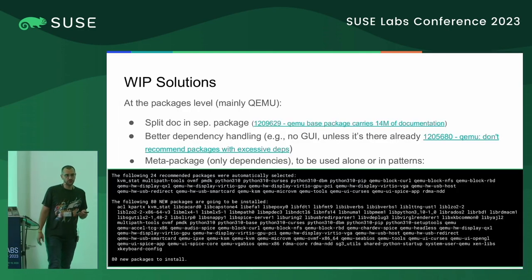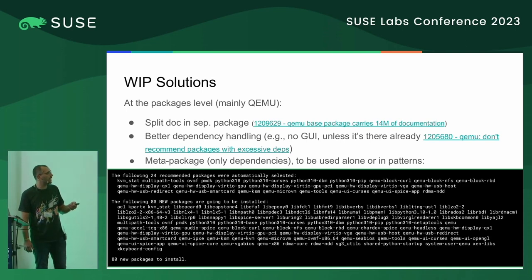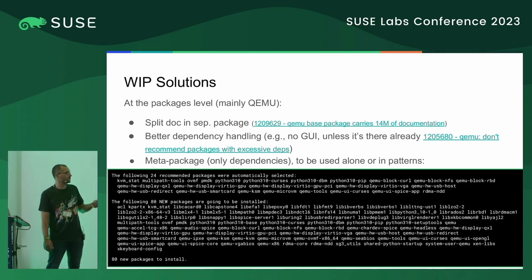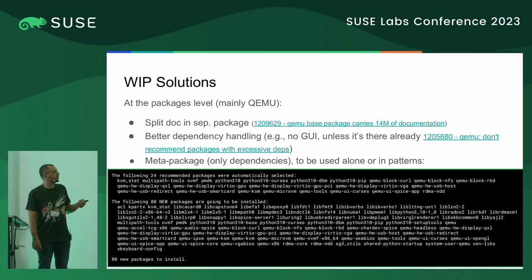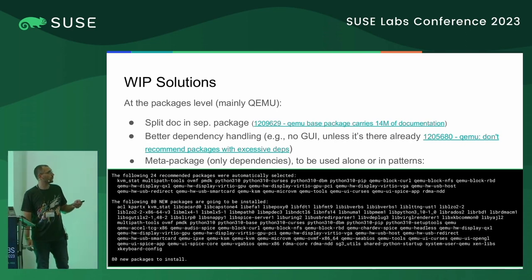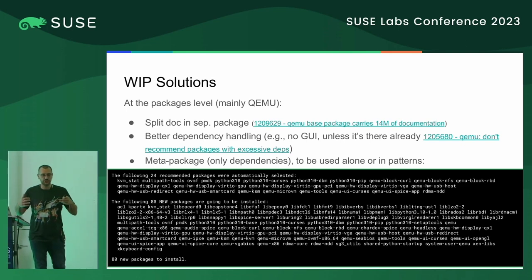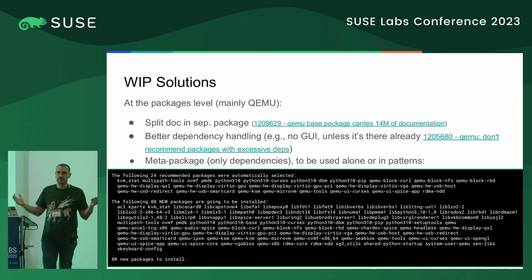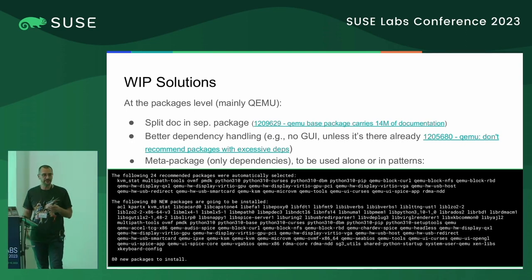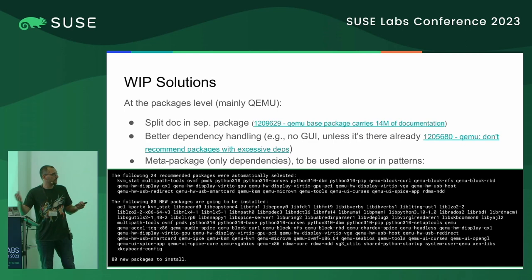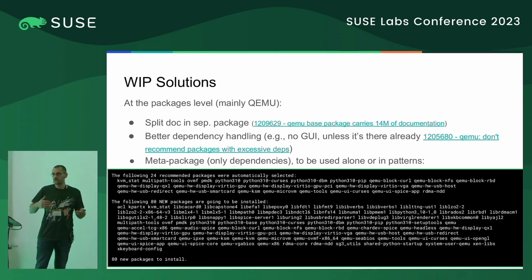There are already open bugs about the situation shown in the previous screenshot, and we are working on them. Even before getting to the patterns, there are things we can do for the various QEMU sub-packages: trying to bring in fewer dependencies to make them smaller, splitting them better, and things like putting docs in their own package.